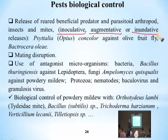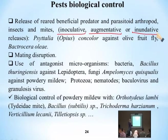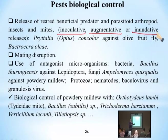Inundative release is usually done seasonally to allow the insect to settle, multiply, and become established in the field. These are the three hypotheses — the three methods of biological control in IPM. In inundative release, I spray and allow the agents to build up on their own in the field, so that I have a continuous supply of biological enemies that are adapted and stable.